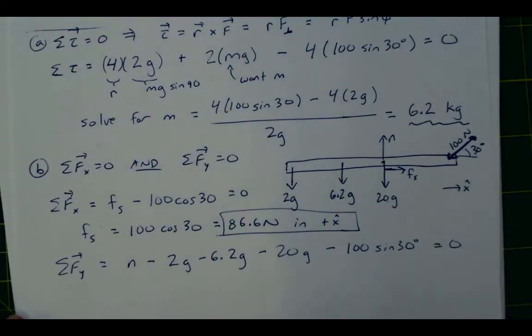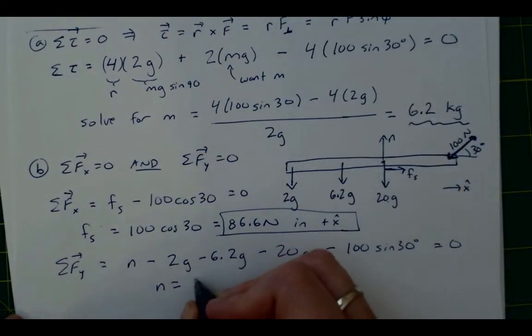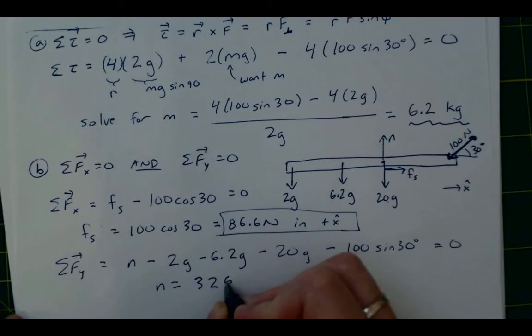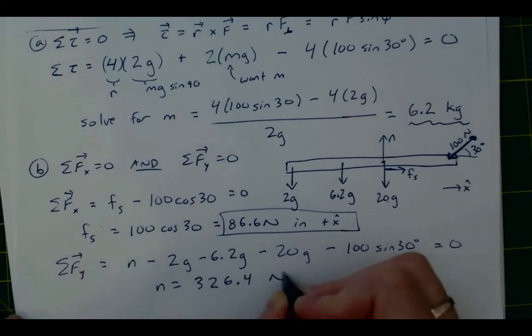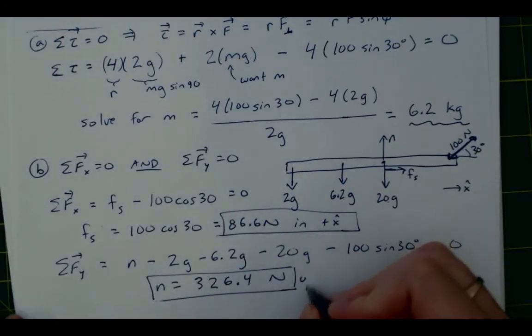And that's gonna then equal zero. And if you then solve for n by just plugging in 9.8 for g and solving for what the net downward force is, then the normal force has to counter that. And that then comes out to be 326.4 newtons upward.